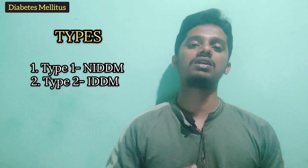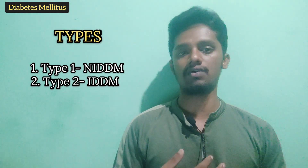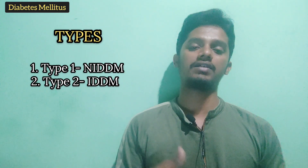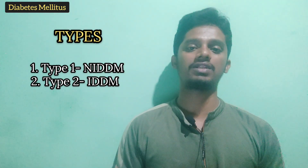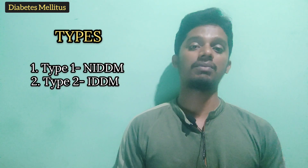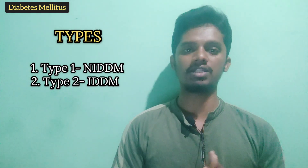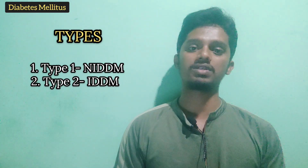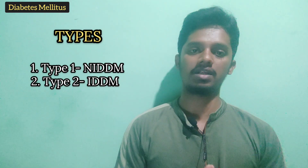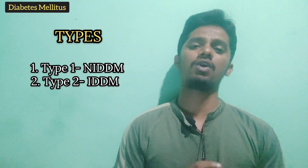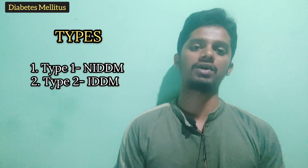Type 1 Diabetes Mellitus occurs in children and adolescents — this is called juvenile onset. Type 2 Diabetes Mellitus has a maturity onset. About 1 to 2% of the total population is affected by diabetes mellitus.